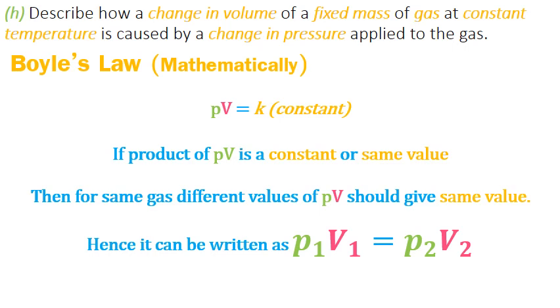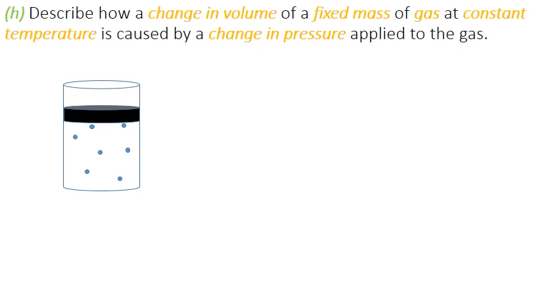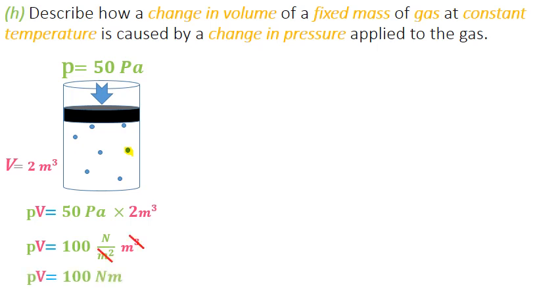Imagine this container. These small blue molecules over here are representing gas molecules, so we have enclosed or trapped a gas in a container. And on the top, this black color here is showing a seal. So initially we have applied a pressure of 50 pascals, and due to this pressure, the volume of the gas is limited to 2 meter cube. Now if you multiply these two values, pressure and volume, 50 into 2, we get 100. And just if we simplify the unit, it's like 100 newton meter. The product of pressure and volume is 100.